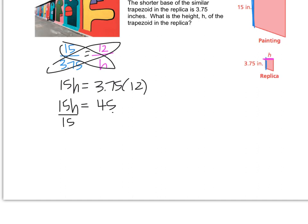So we get 15h equals 45. Divide both sides by 15, and you get h is 3. So that tells us that that dimension is 3 inches. If you have any questions, write them down and ask me when you come to class.